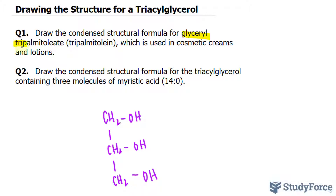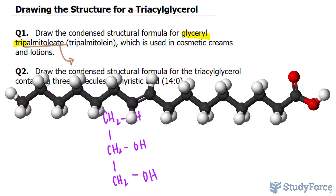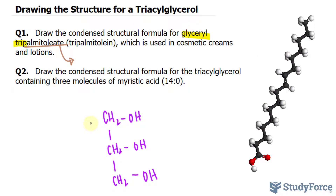Specifically in our case, we have palmitoleate, which is referencing palmitoleic acid. If you watched one of our previous videos, palmitoleic acid is a 16-carbon chain and it has a double bond on carbon-9. To form a bond between glycerol and those fatty acids, an ester bond forms between this oxygen and the carboxyl group of that hydrocarbon.